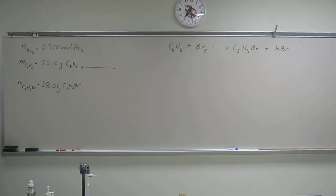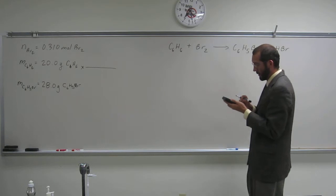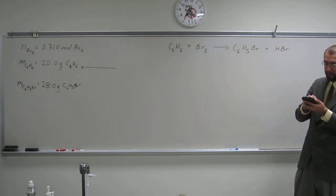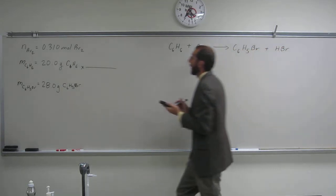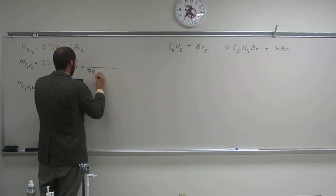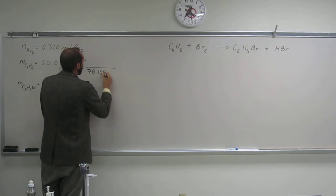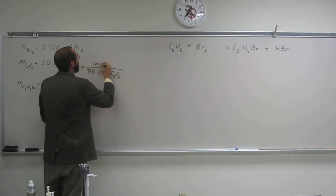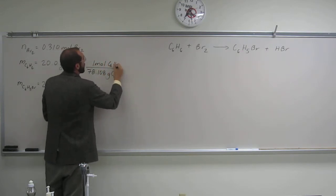Okay, so C6H6, so 6 times 12.01 plus 6 times 1.008, and correct me if I'm wrong, but I get 78.108 grams of C6H6 per one mole of C6H6, right?